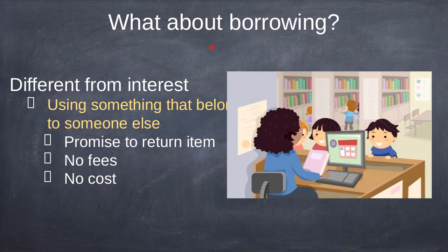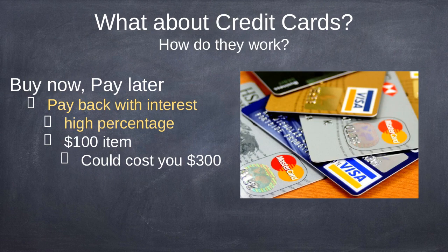Borrowing is completely different than renting. Borrowing is using something that belongs to someone else with a promise to return the item — no fees or cost. The best way to think about this is a library book. You're not buying it, you're not renting it — you're borrowing it. You go into the library, say you want to borrow the book, they scan your library card, tell you when it has to be back, and you promise to return it by that date. That is what borrowing is.